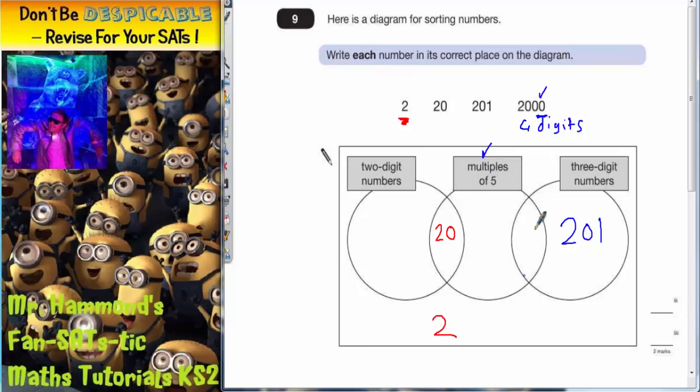So the only one it satisfies is a multiple of 5. So it's got to go somewhere in this circle. But it can't go in this overlapping bit with the 20 because it hasn't got 2 digits, and it can't go in this overlapping bit because it hasn't got 3 digits. It's actually got 4 digits. So it's got to go in this bit here but not in the overlapping bits. So 2000 will have to go in there.